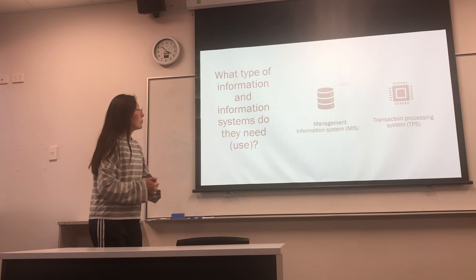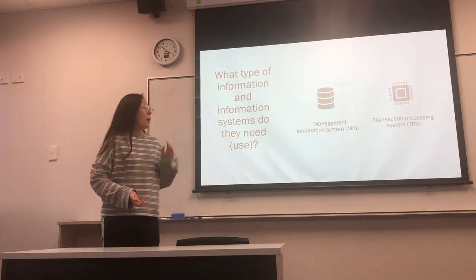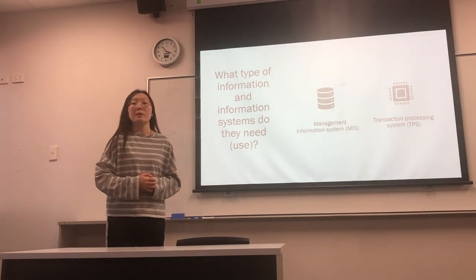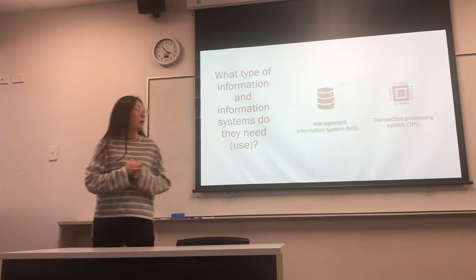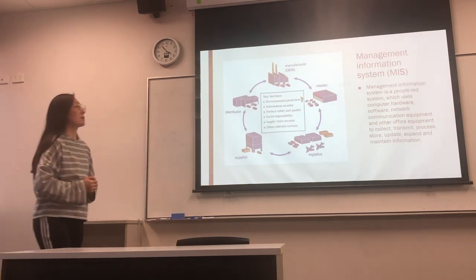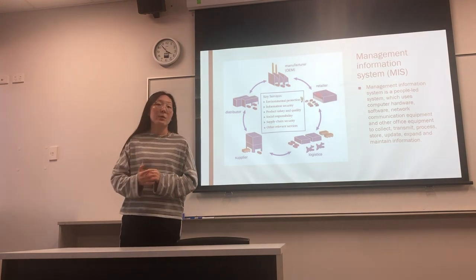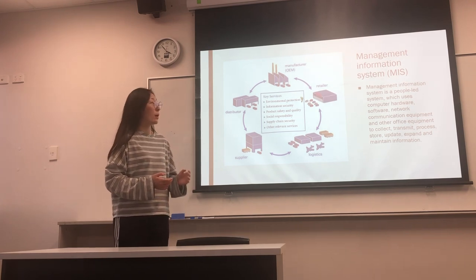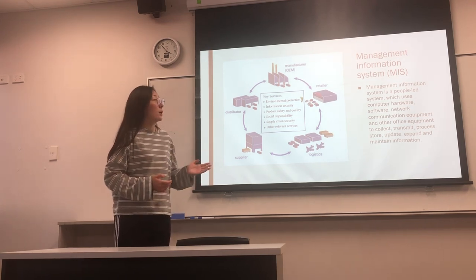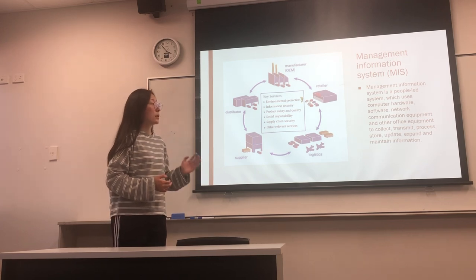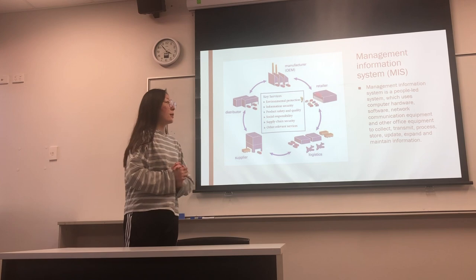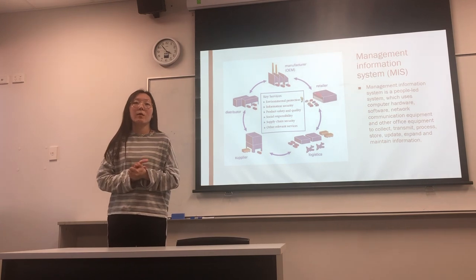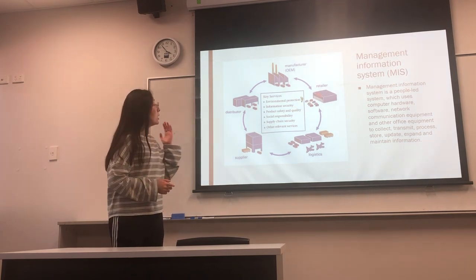So what type of information and information systems do they need? They have two information systems: management information systems and transaction processing systems. Let's talk about the MIS systems first. Management information systems is a people-led system which uses computer hardware, software, network, communication equipment and other office equipment to collect, transmit, process, store,